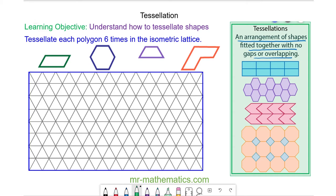I'm going to demonstrate how each of these four shapes will tessellate. We begin with the green parallelogram.